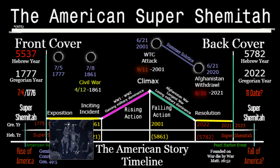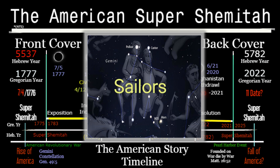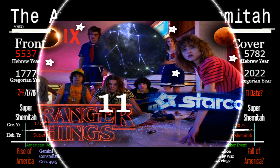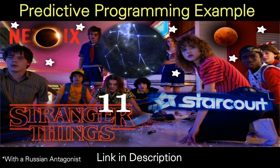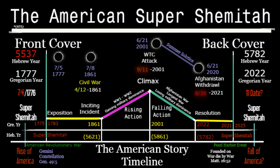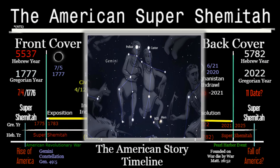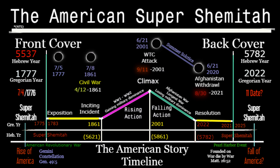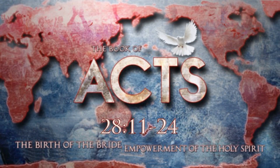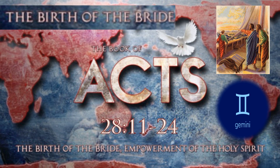Touching on one more point — Castor and Pollux, sailors, and their connection to America around the Fourth of July: that's exactly what the Netflix cover poster for Stranger Things 3 was representing — this constellation within the cover, a solar eclipse, and this story's timeline occurring during the Fourth of July weekend. That acts as a great credibility marker for the American Super Shemitah and the relationship between America and the constellation of Gemini. Now let's cover the second meaning of Gemini: the bride of Christ.